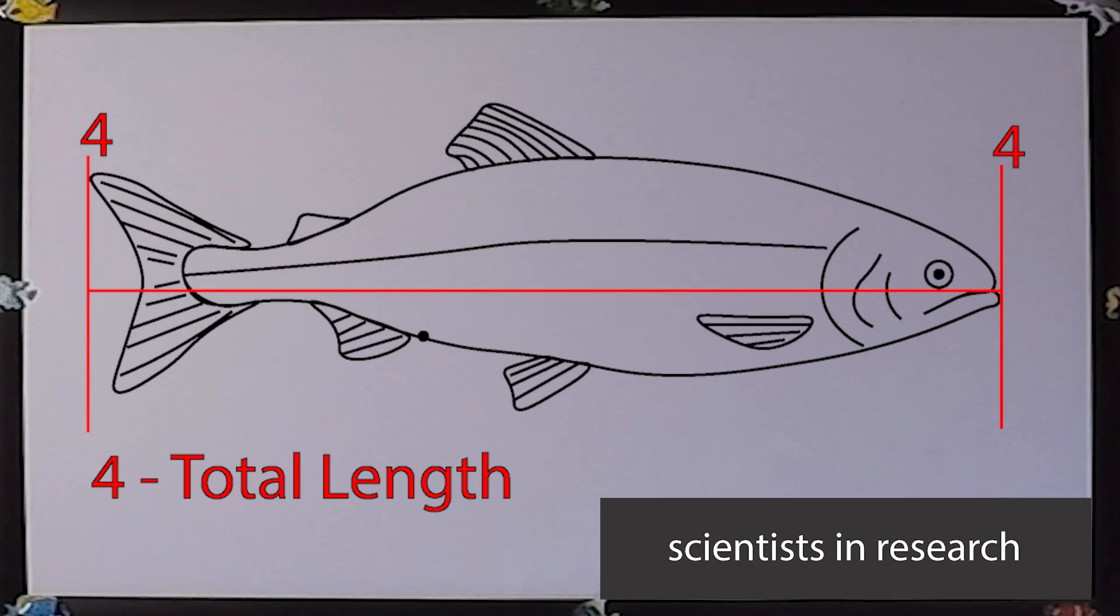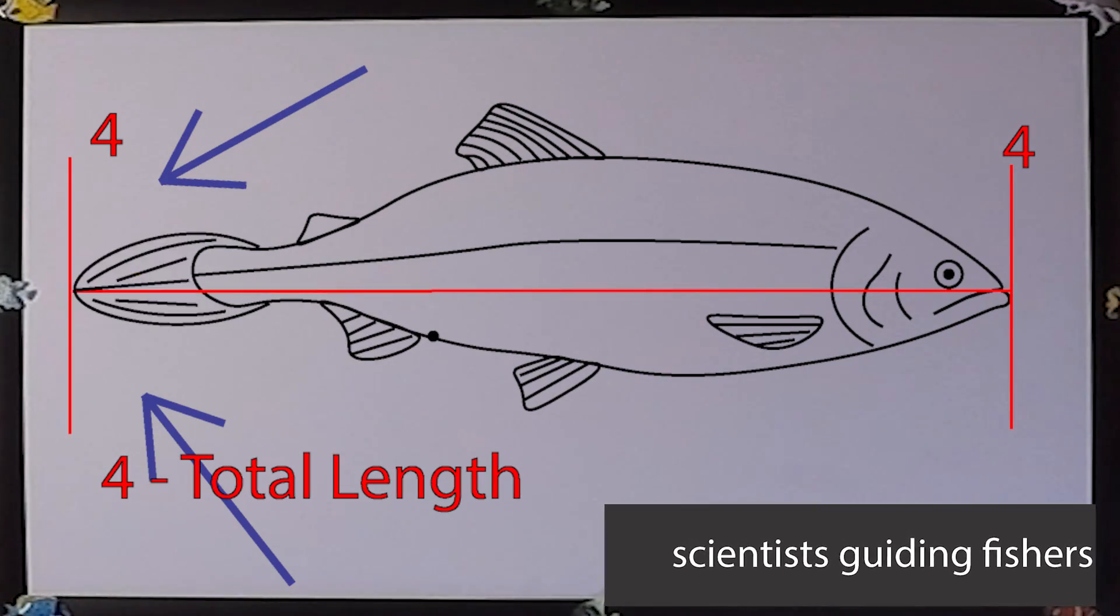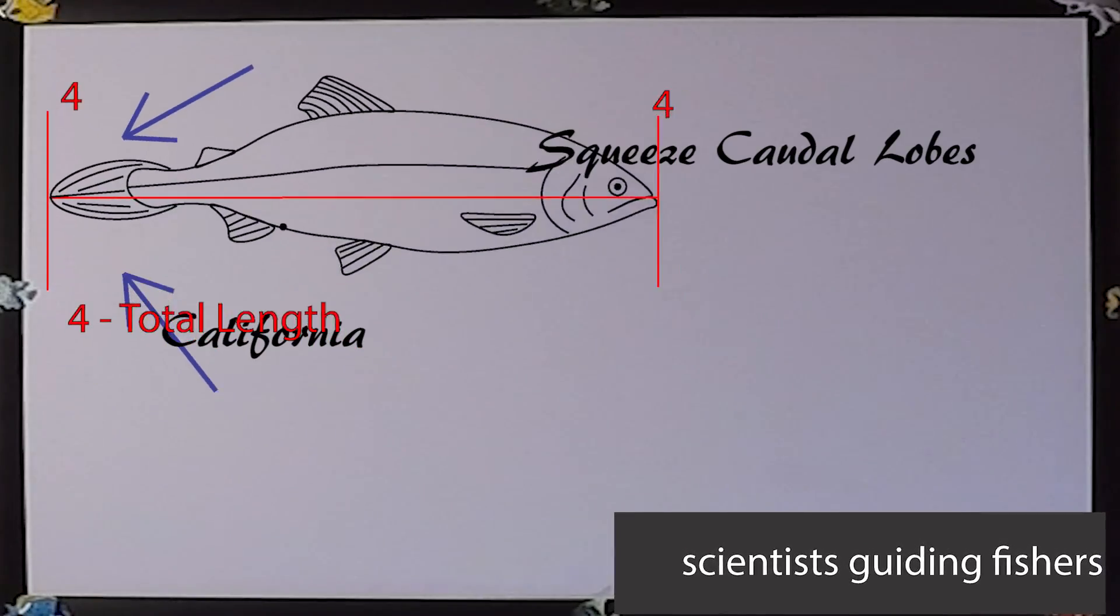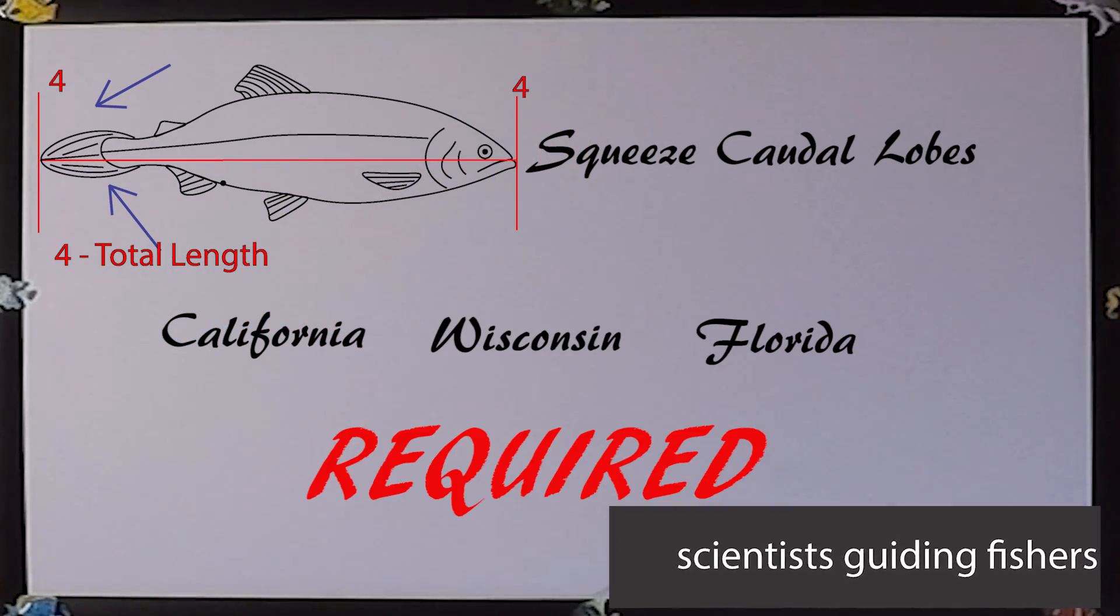Firstly, when ichthyologists measure fin fishes for a total length, that is, the most anterior tip of the snout or mouth to the most posterior part of the tail, they do not squeeze the caudal lobes together. Where most Department of Natural Resources and government gaming and fishing regulation officials suggest that the two caudal lobes are squeezed together. For example, in California, Wisconsin, and Florida, this is required for measuring fin fishes.